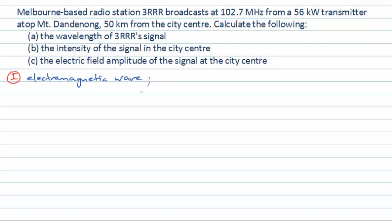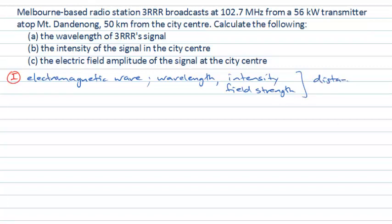The properties we're interested in for this question are the wavelength of this particular electromagnetic wave, the intensity of the wave, and the electric field strength of the wave — and specifically what those quantities are as a function of distance from where the wave was produced. We're told there's a transmitter at some distance from the city centre, and we want to know something about the intensity and field strength at some distance from that transmission point.